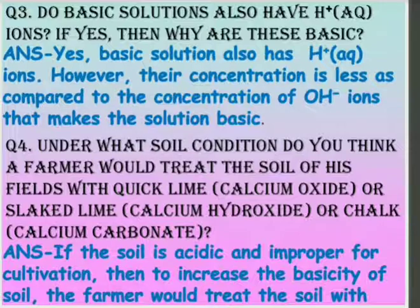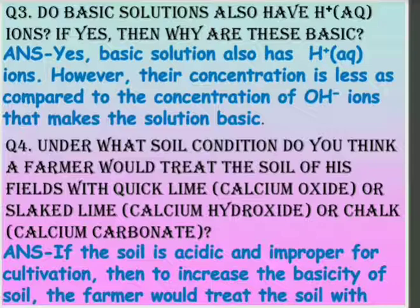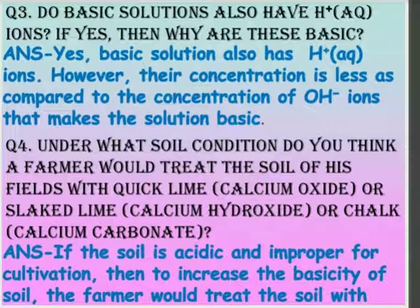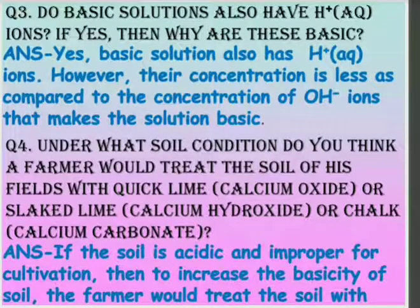Under what condition would a farmer treat the soil of his field with quicklime, slaked lime, or chalk? Calcium oxide, calcium hydroxide, and calcium carbonate — all of these are basic in nature. If a farmer is adding a basic substance to his soil, it means the soil is naturally acidic. To neutralize the effect of the acid, he adds a base to the field so that a neutralization reaction takes place and salt and water are formed.